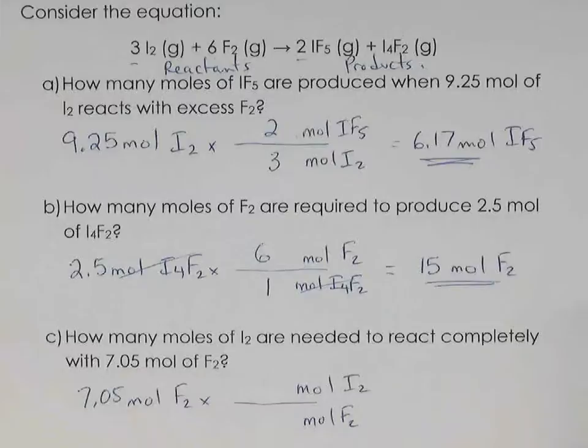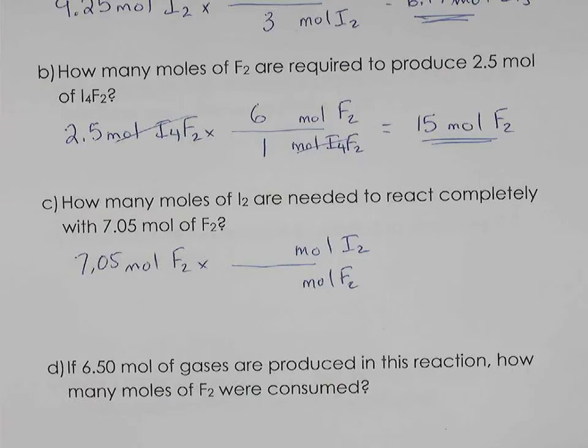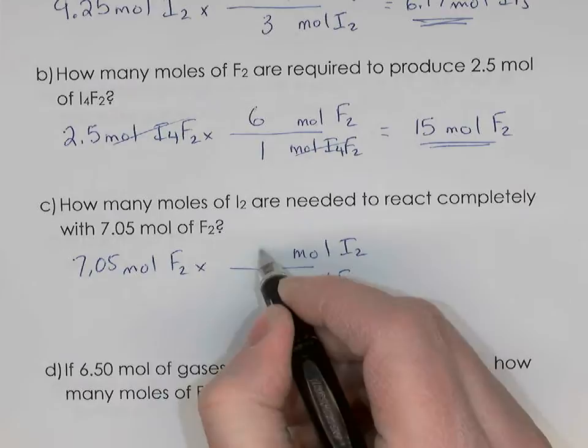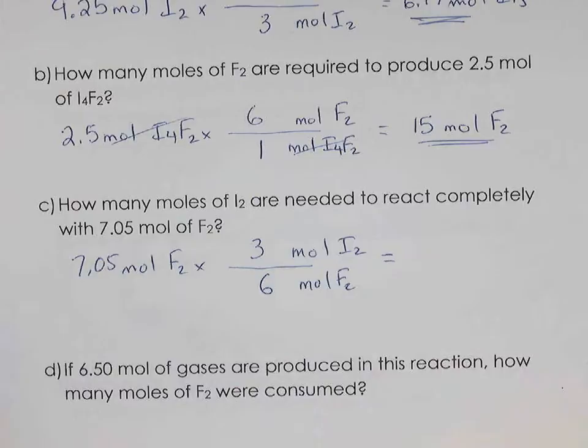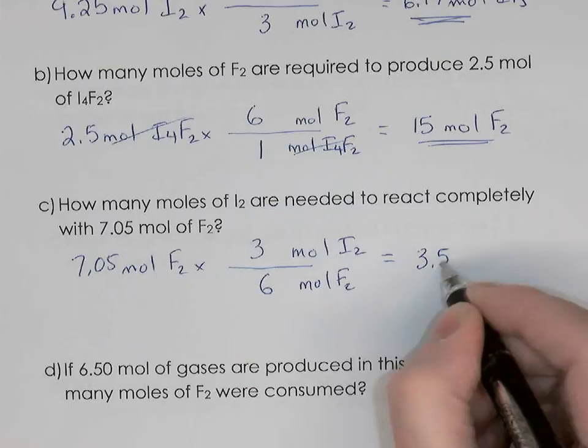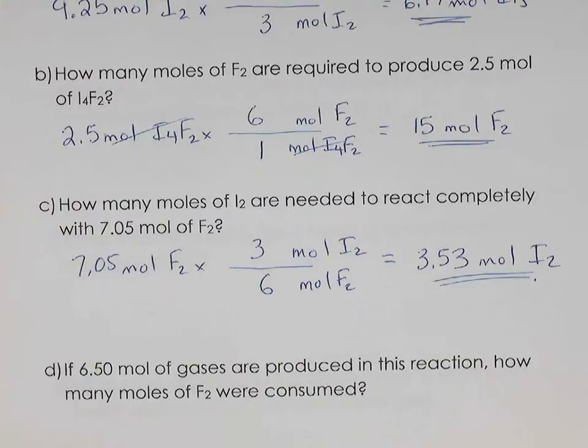So: how much iodine will react completely with 7.05 moles of fluorine? From the balanced recipe — 3 moles of iodine for every 6 moles of fluorine — it's half as much. So 7.05 × 3 ÷ 6 (or divide by 2) gives 3.53 moles of iodine needed.